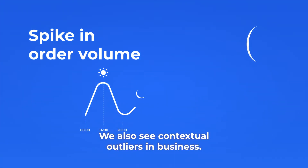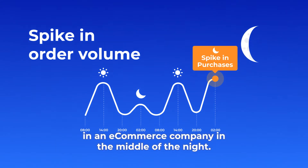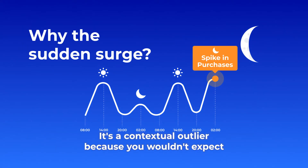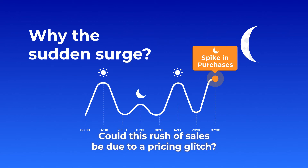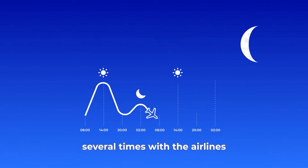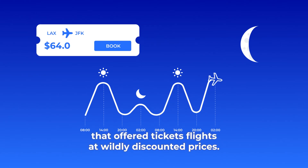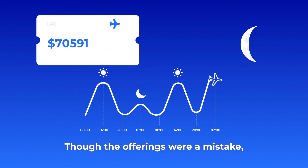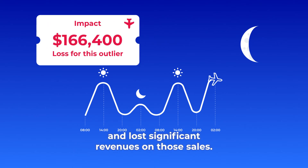We also see contextual outliers in business. Consider a sudden surge in order volume at an e-commerce company in the middle of the night — it's a contextual outlier because you wouldn't expect this high volume to occur outside daytime. Could this rush of sales be due to a pricing glitch? This scenario has actually happened several times with airlines that offered tickets at wildly discounted prices. Though the offerings were a mistake, the airlines usually honored the prices and lost significant revenues on those seats.